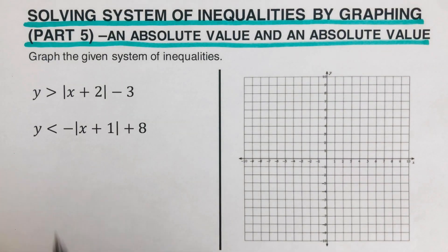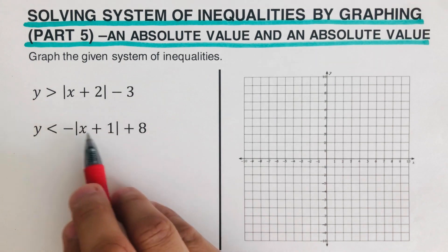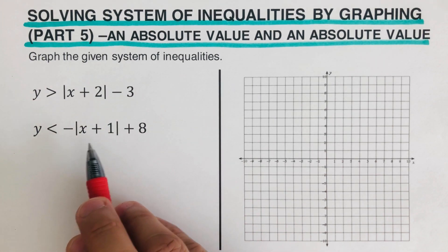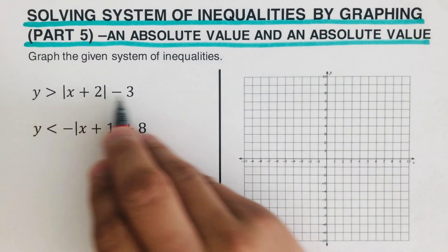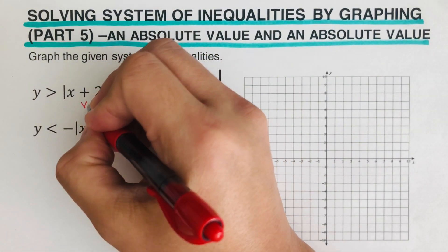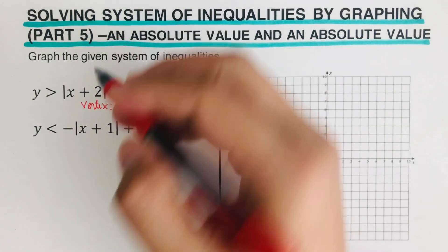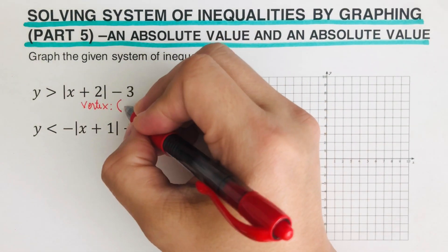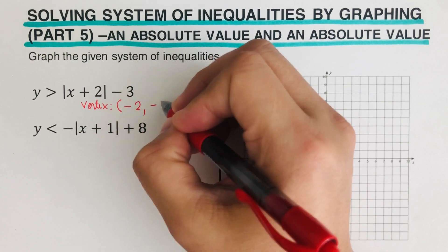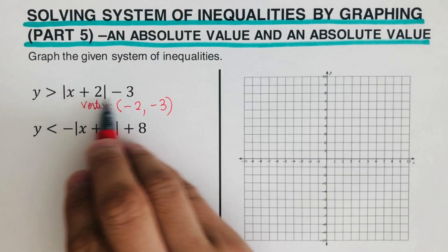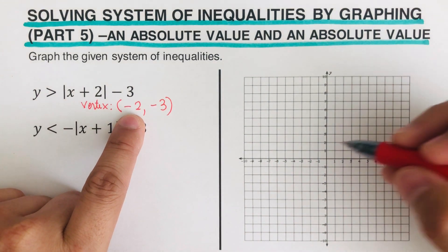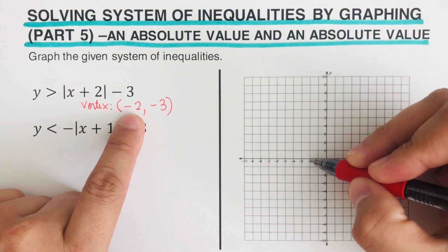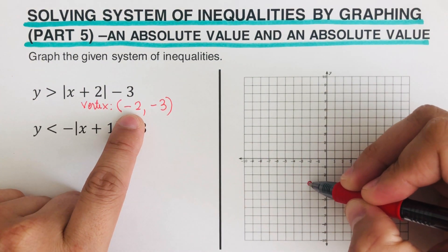Going over this first example, both of these are absolute value inequalities. The first step is to determine the vertex. Let's graph the first inequality first. Remember, the vertex is found using 'switch and keep.' So this would be negative two and negative three. The first dot is located at negative two, negative three — that's the vertex.